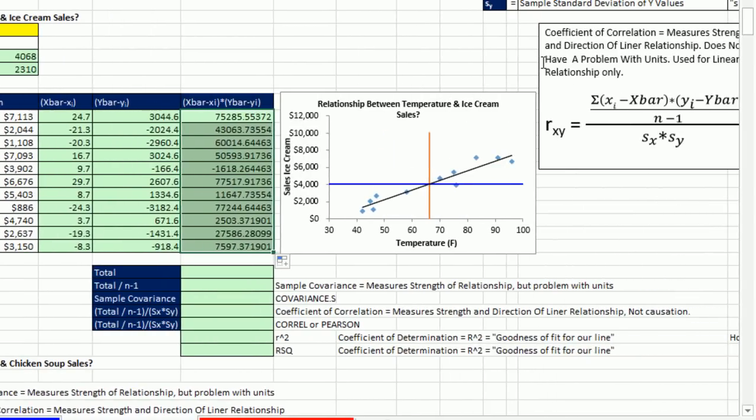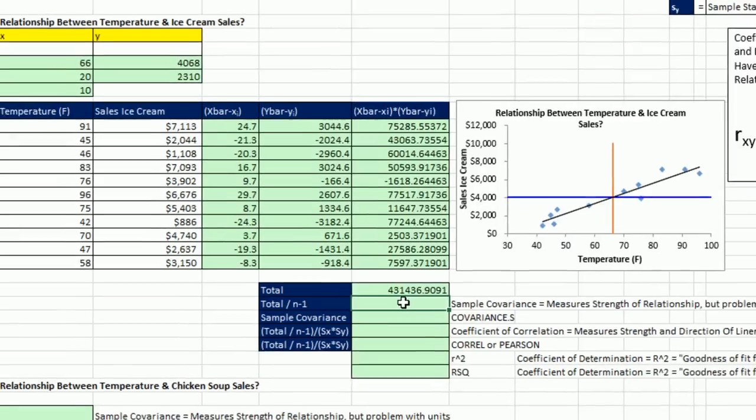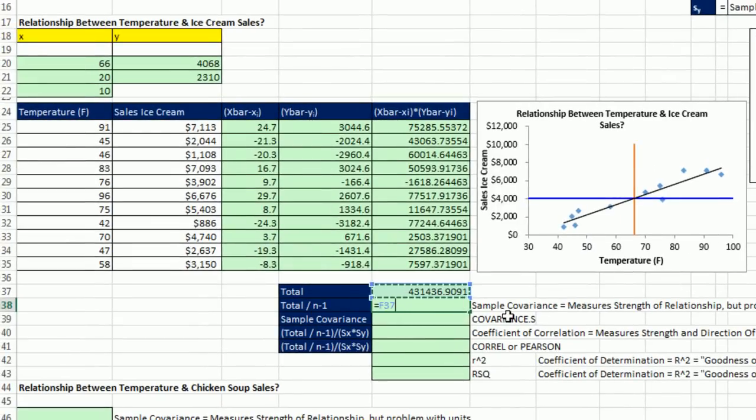Guess what? If we look at coefficient of correlation, remember we said we're going to take the covariance and divide it by the standard deviations multiplied. What we just did is we calculated all of the x-bars and the y-bars, multiplied them, and now let's do the sum part. Alt-Equals. And I'm going to direct it exactly to the cells I want and Enter. So that 43,436.91, that's the top part before we divide by n minus 1. So now we're going to take equals total of all the multiplied deviations divided by our n minus 1 and Enter. That is sample covariance.